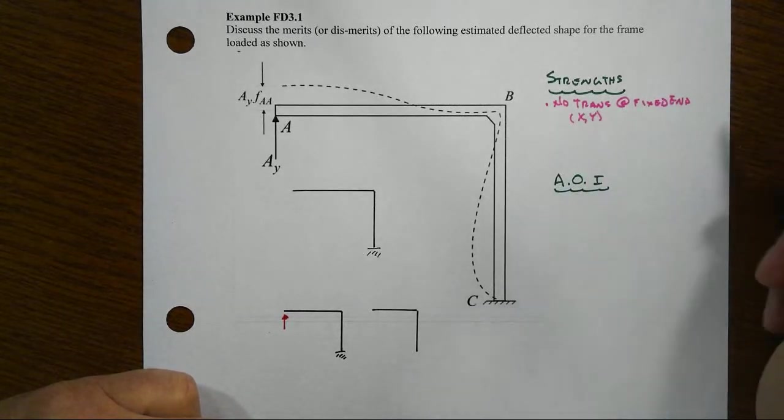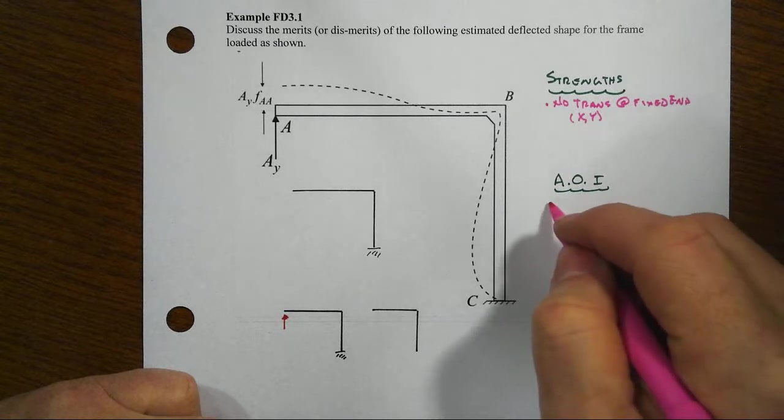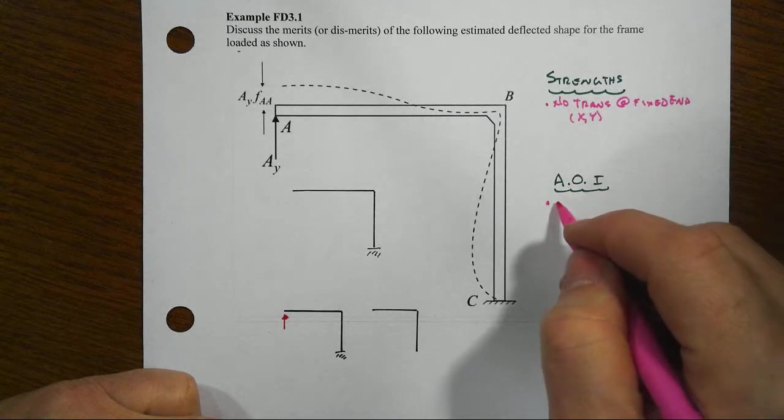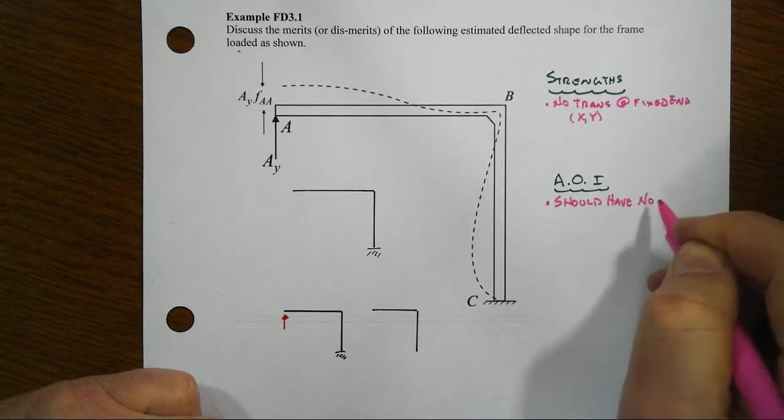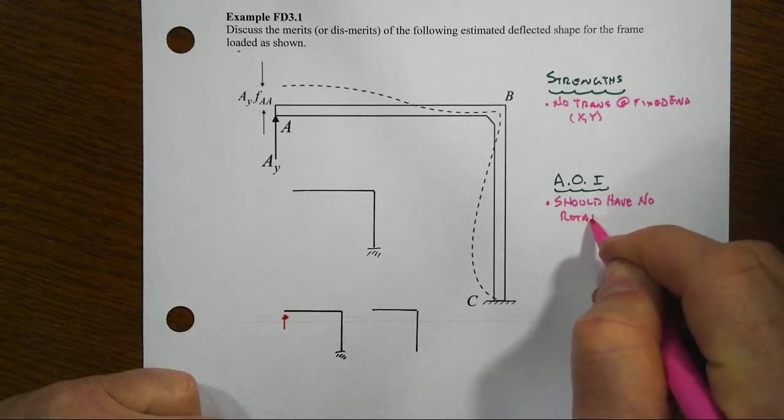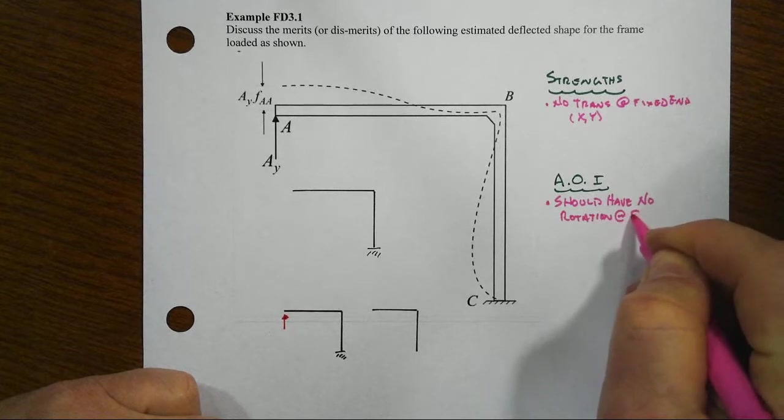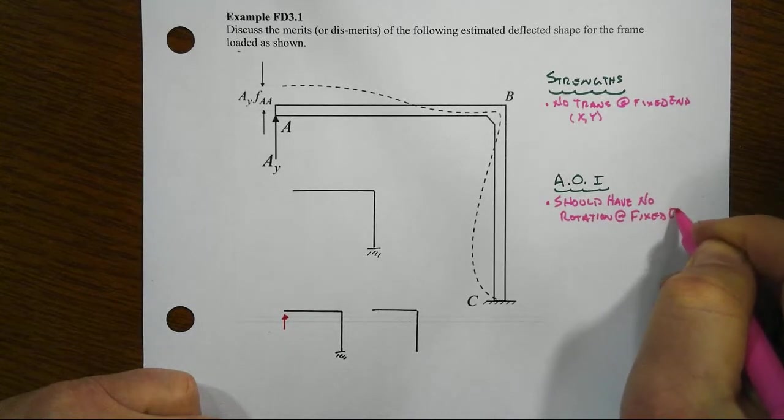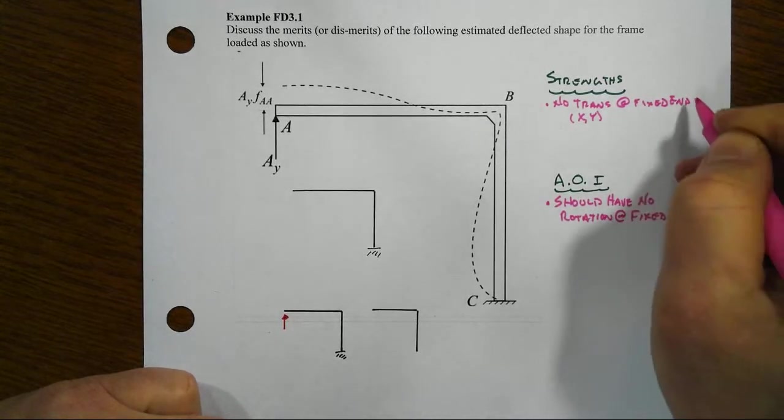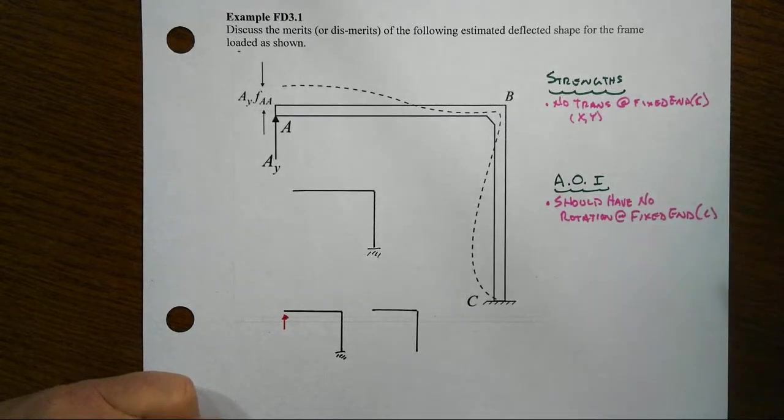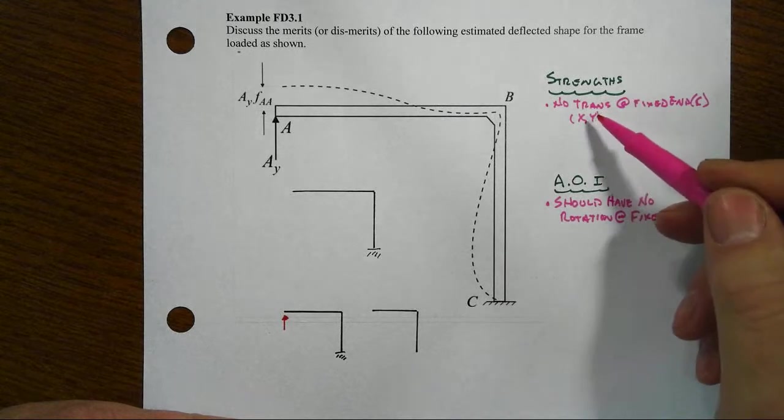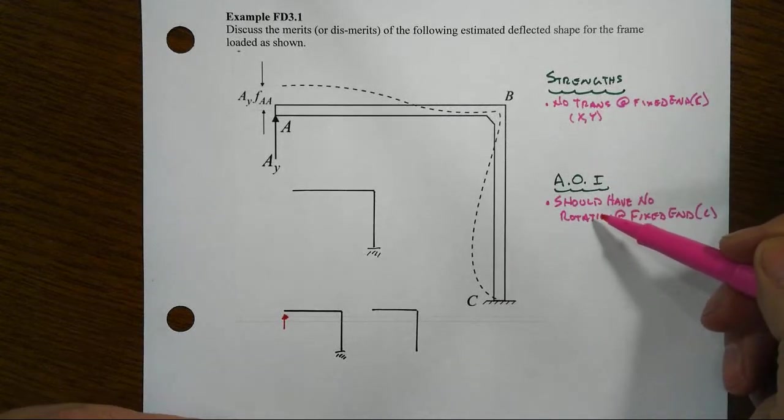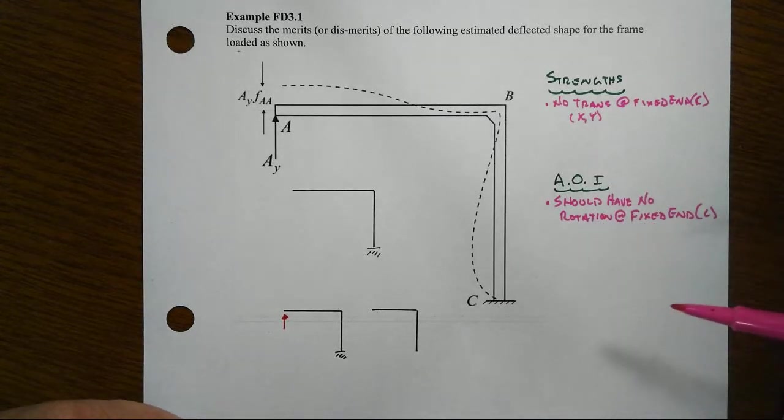Unfortunately, what we do have is we should have no rotation at the fixed end, which of course is at c in this particular one, so that's at least two areas of strength and one area of improvement for the proposed deflected shape.